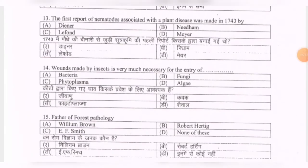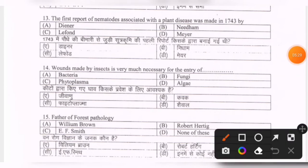Next question: the first report of nematodes associated with a plant disease was made in 1743 by — options are Dino, Needham, Leafon, Maya. The correct option is B — Needham.